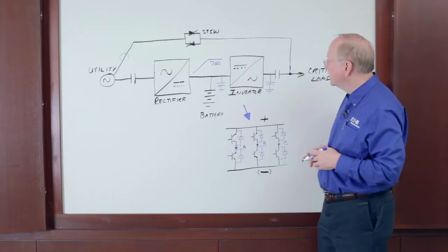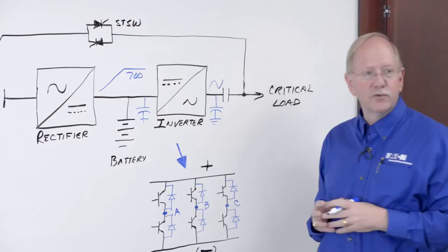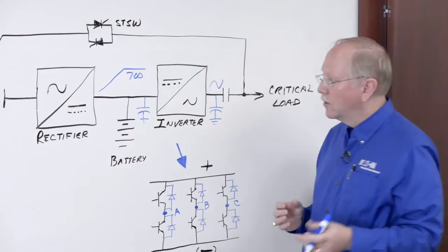Then once the 700 volts appears, the inverter can start, take DC, make AC, but this AC output of the inverter has to be in sync with the critical bus before we can close the output contactor. That's another delay of 10 to 15 seconds to wait for sync.